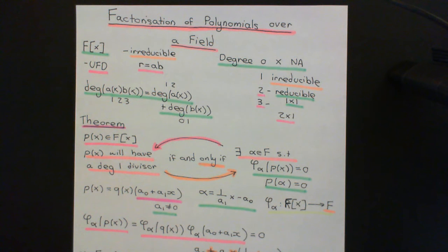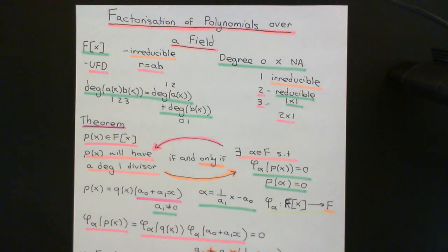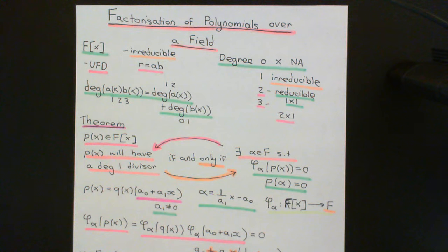Welcome back to this next video in which we are discussing factorization of polynomials over a field. We've now discussed a theorem concerning when a polynomial from a ring of polynomials over a field is going to have a degree 1 divisor, and we've used this theorem to understand when a polynomial of degree 2 or degree 3 is going to be reducible, and when it's not.